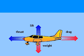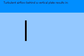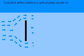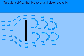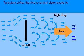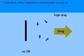Planes are designed around wings, and wings are designed according to the rules of aerodynamics. If a vertical plate is subjected to fast-moving air, a turbulent and chaotic airflow will occur as air passes by.